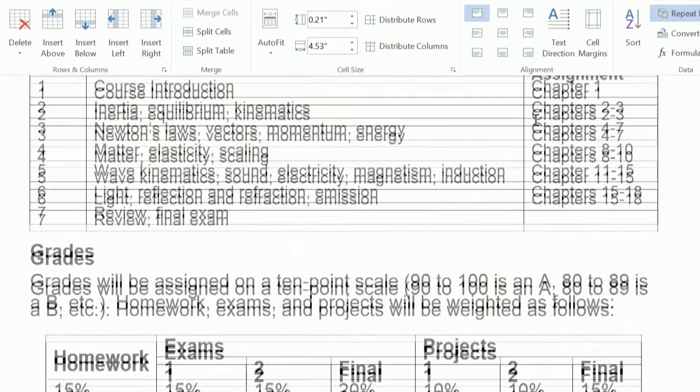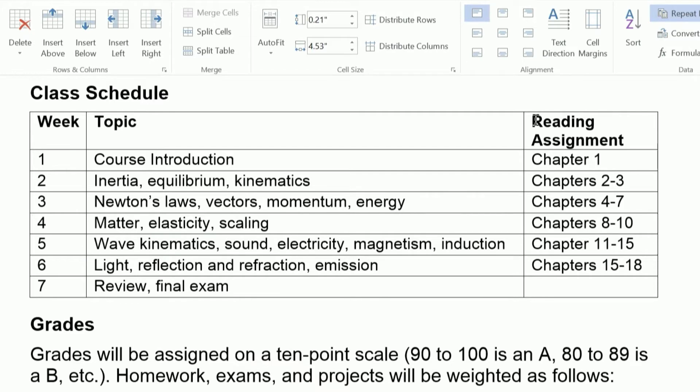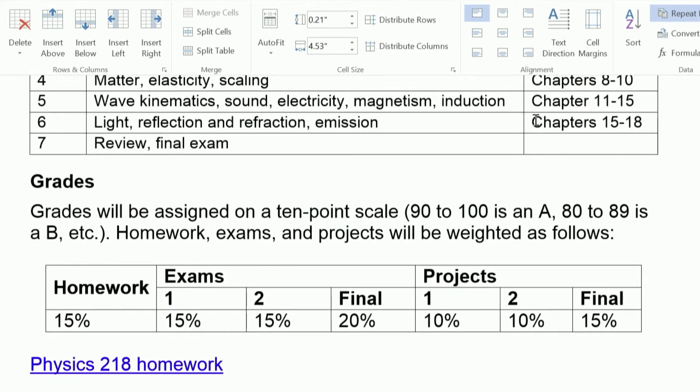Our example one table has a descriptive title, class schedule, and example two table has a descriptive summary. Homework, exams, and projects will be weighted as follows.